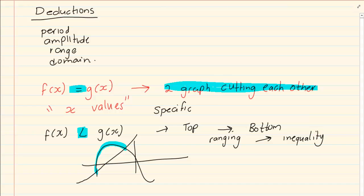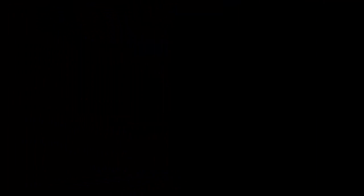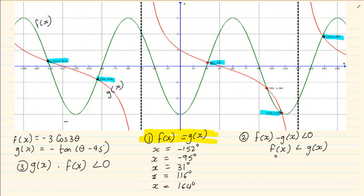Now let's look at the one we have. We want to know where f(x) is smaller than g(x). So f(x) is the green line. We're going to see where f(x) is smaller than g(x), which means the green line must be under the red line.